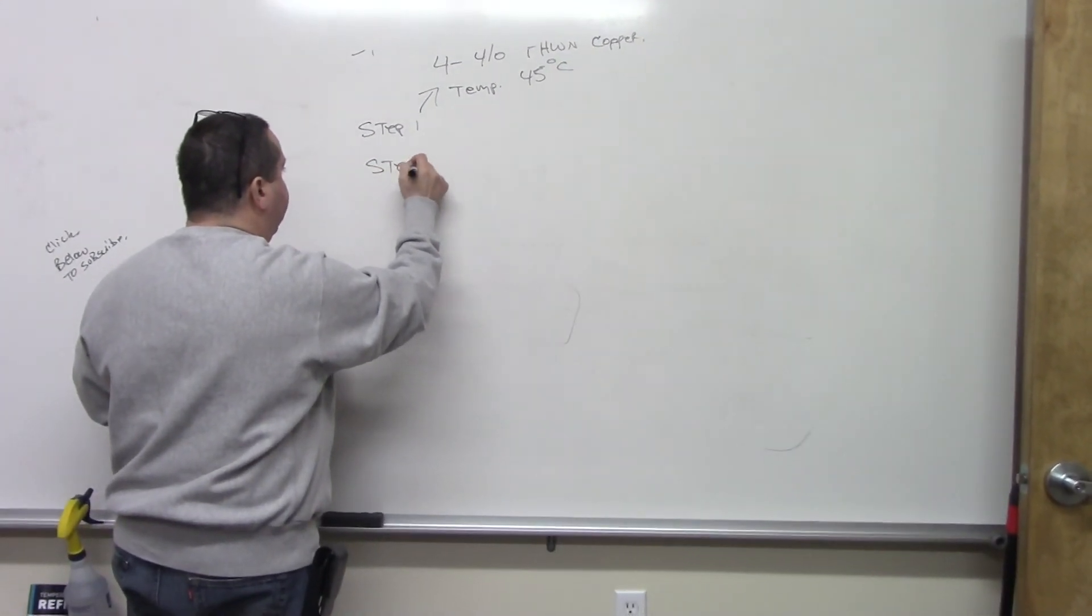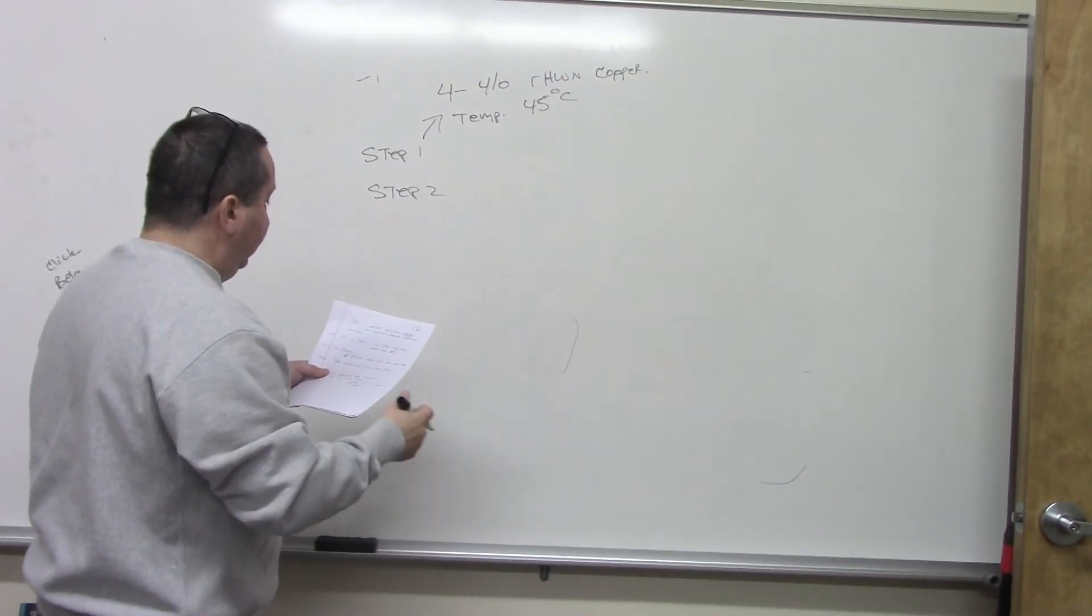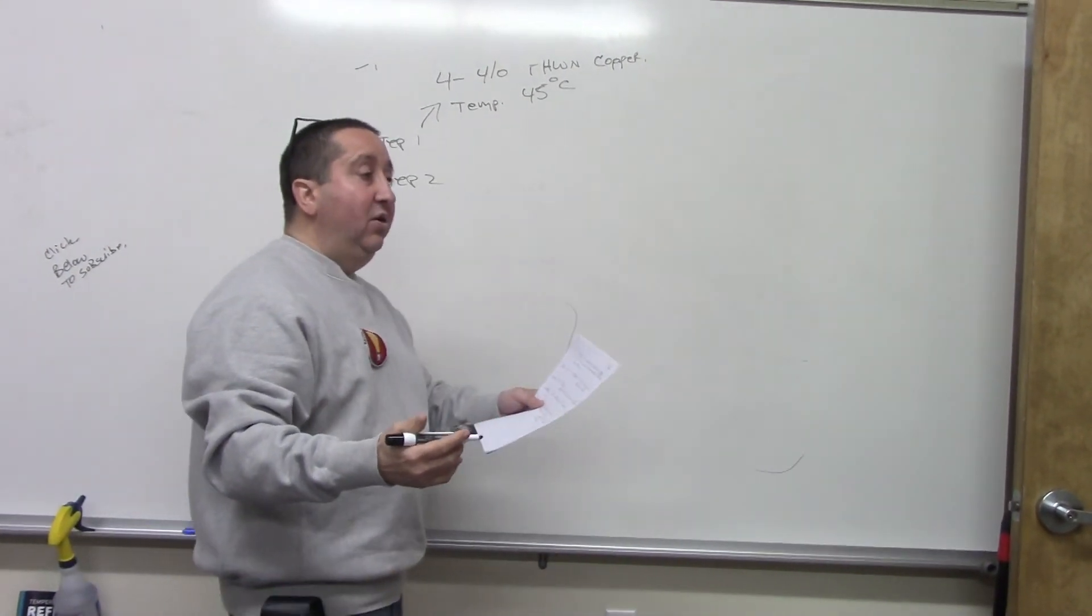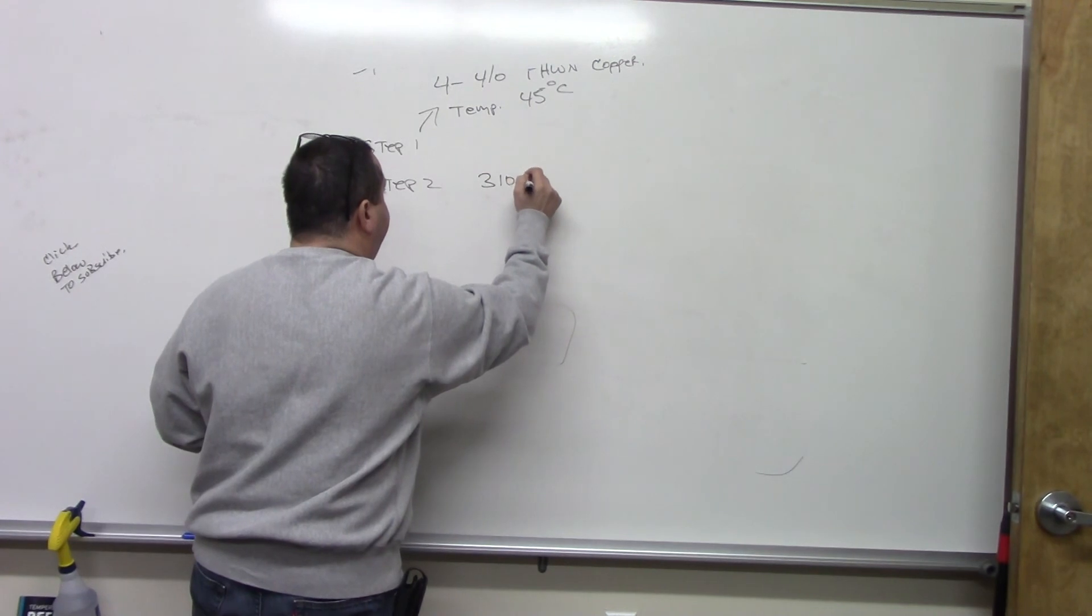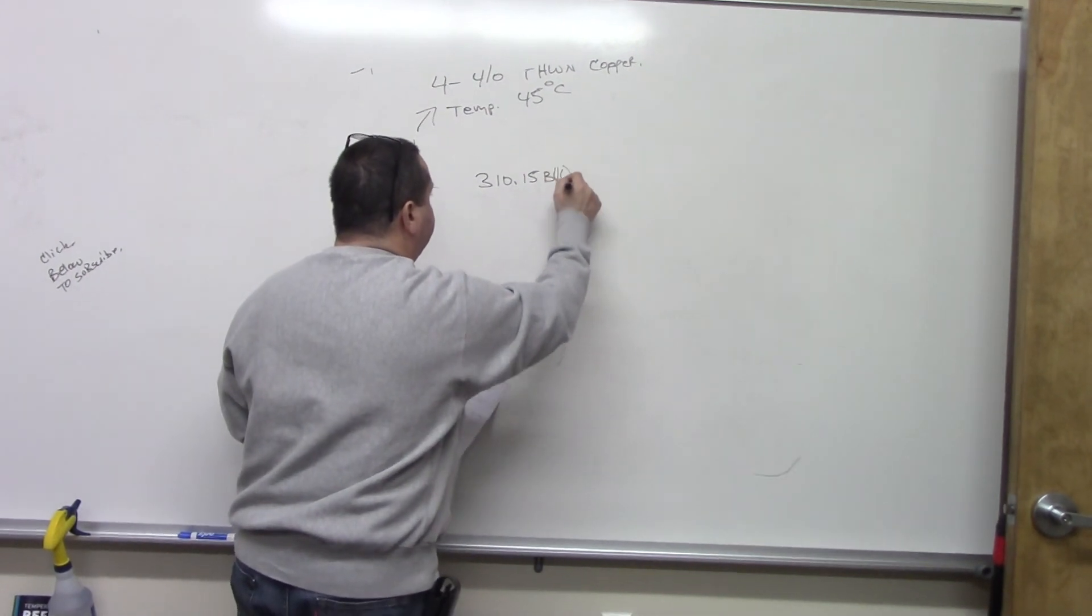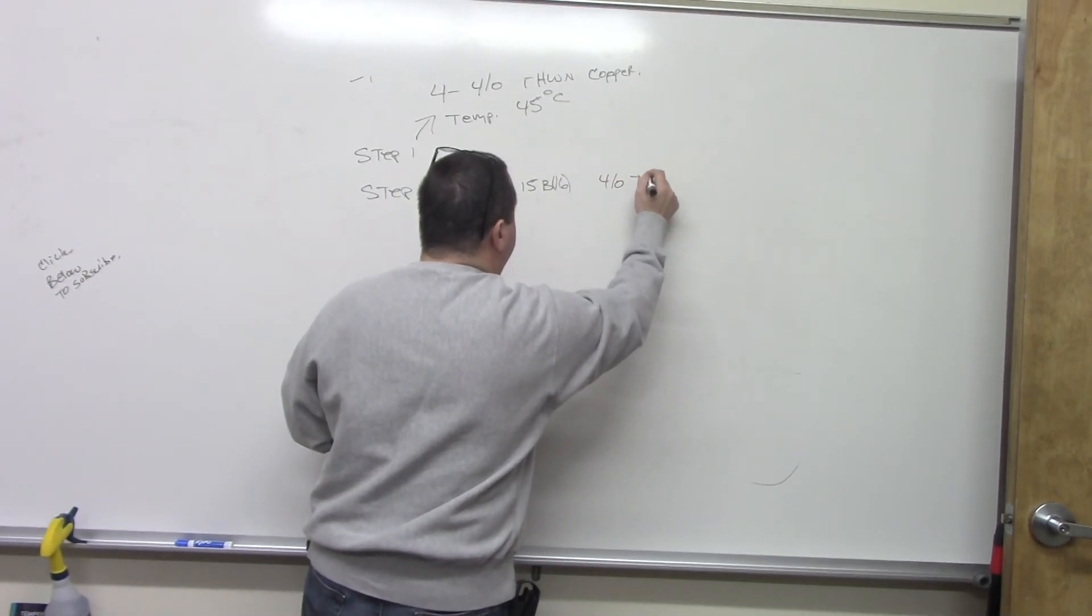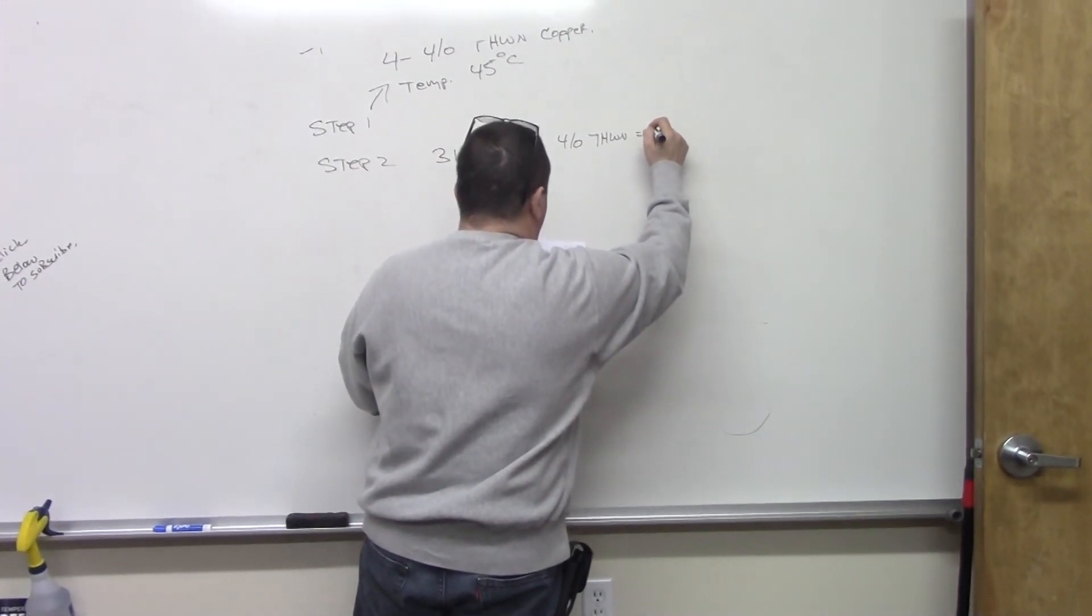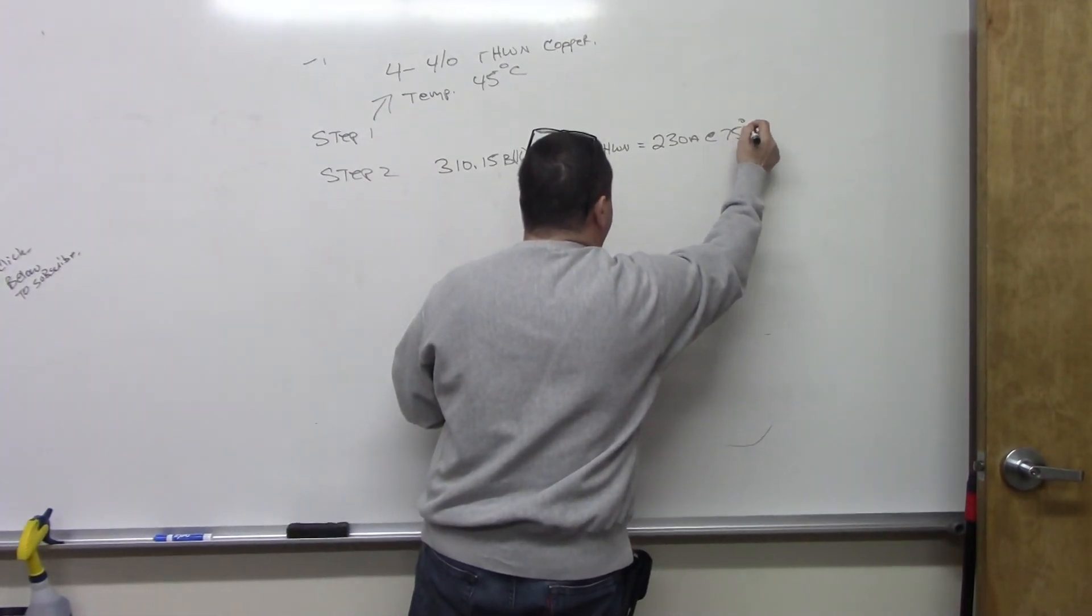Step two is we're going to find out what a 4 AWG THWN copper ampacity is, and then what's the adjustment factor for it. For the ampacity, we go to Table 310.15B16. And when we go to it,